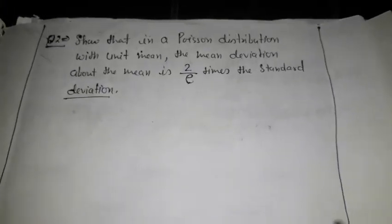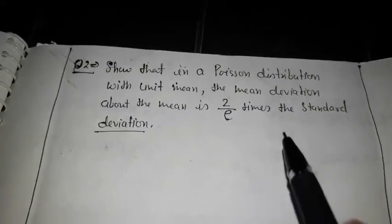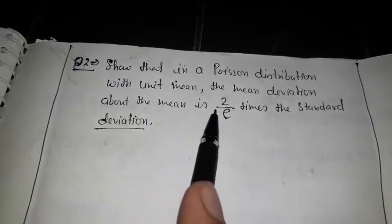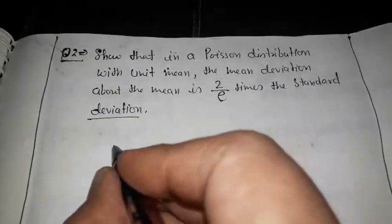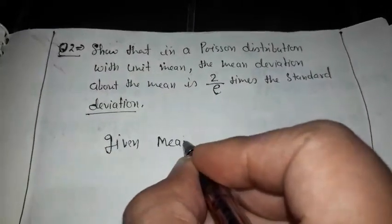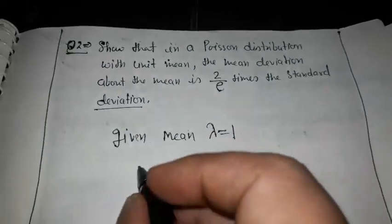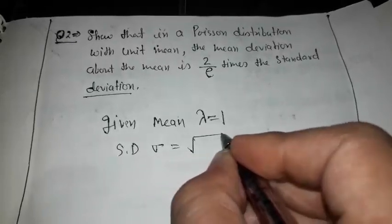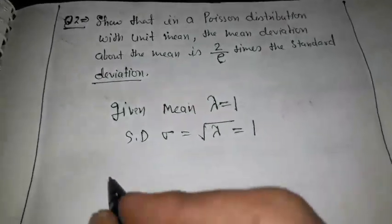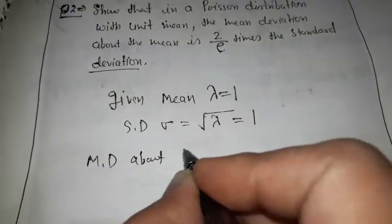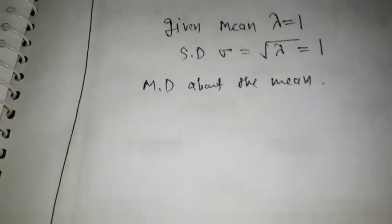The next problem is: show that in a Poisson distribution with unit mean, the mean deviation about the mean is 2 upon e times the standard deviation. Here we need to show that for a Poisson distribution with unit mean (mean = 1), the mean deviation about the mean equals 2 upon e times the standard deviation. Given: lambda equals 1.